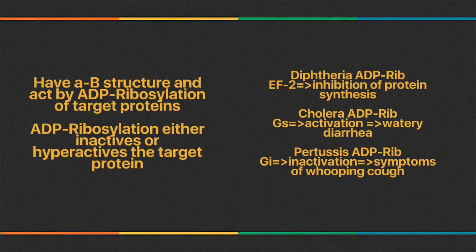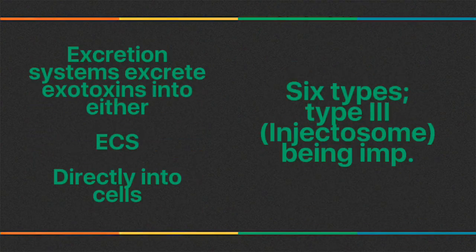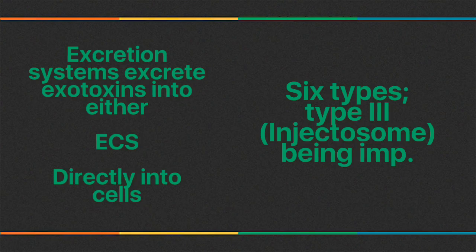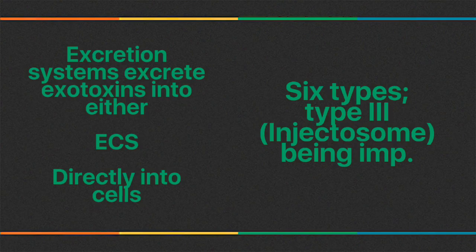Exotoxins are excreted through secretion systems, which either release exotoxins into extracellular space or inject them directly into cells. There are six types of secretion systems. Type 3, the injectosome, is the most important — mediated by a needle-like projection also known as a molecular syringe with transport pumps in the bacterial cell membrane. Examples using Type 3 include Pseudomonas aeruginosa, Shigella, Salmonella, E. coli, and Yersinia pestis.